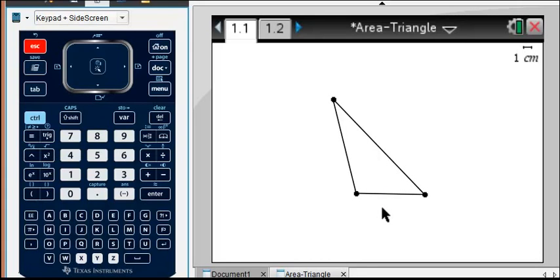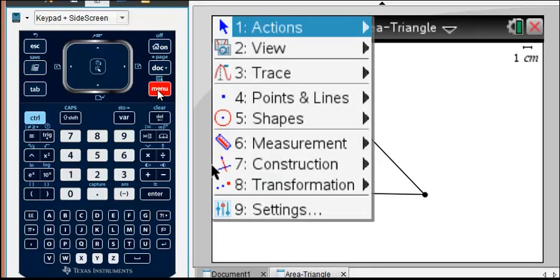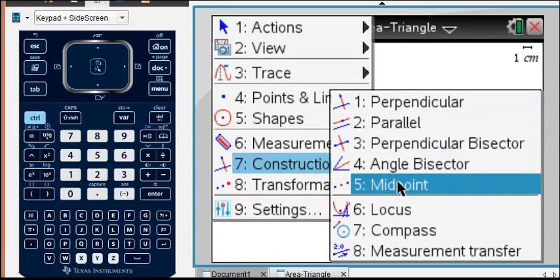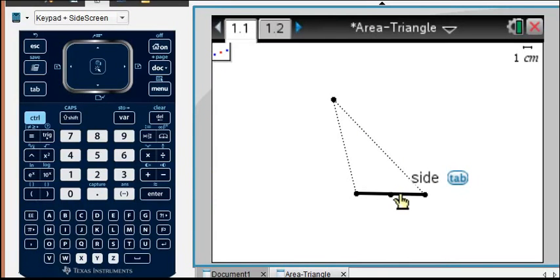And it says I want one half the base so that means I need a midpoint. So I'm going to construct the midpoint by using Menu, Construction, Midpoint. And I'm going to construct the midpoint of this side. As you'll see I also need the midpoint of another side. So I'm going to click that.